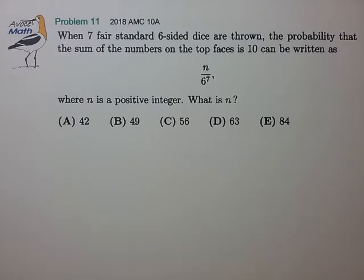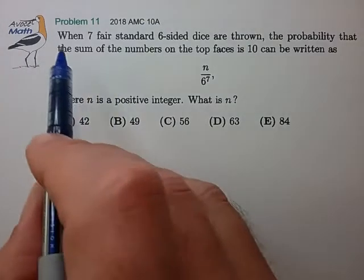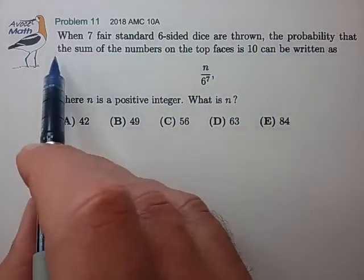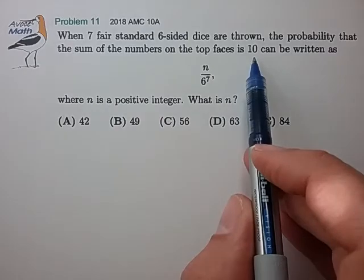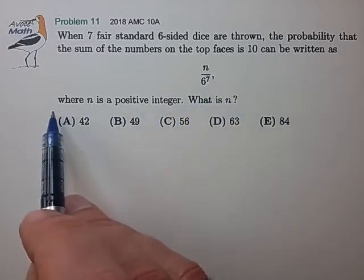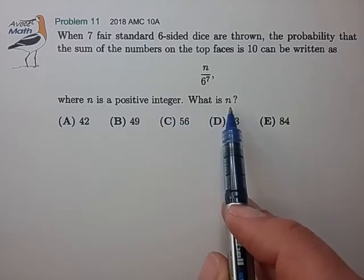Hi, this is problem 11 from the 2018 AMC 10A. When 7 fair standard six-sided dice are thrown, the probability that the sum of the numbers on the top faces is 10 can be written as n divided by 6 to the 7th, where n is a positive integer. What is the value of n?